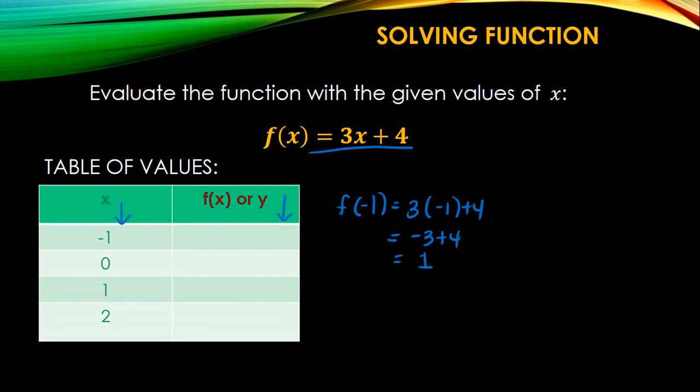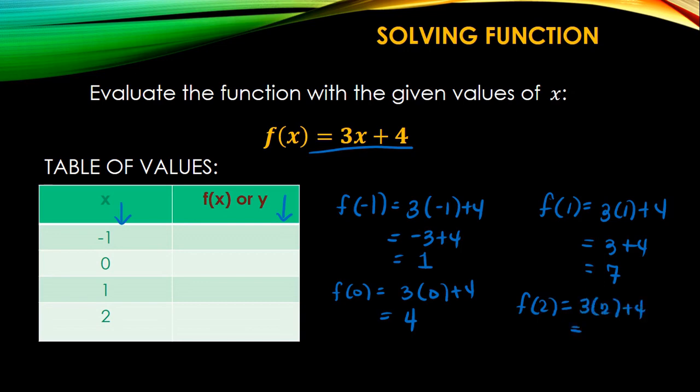So for the second one, we have function of 0 equals 3 times 0 plus 4. So the answer is 4. Next, we have function of 1 equals 3 times 1 plus 4. So that would give us 3 plus 4 equals 7. And lastly, we have function of 2 equals 3 times 2 plus 4. So this is 6 plus 4 equals 10.